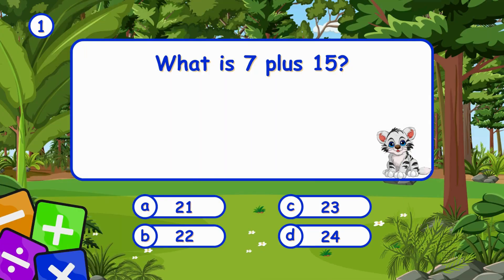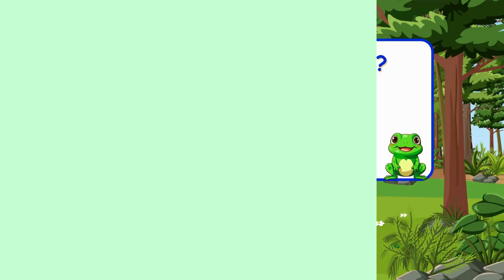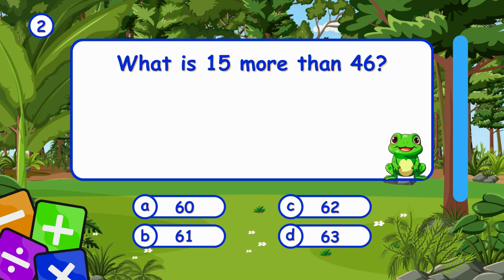What is 7 plus 15? It's B, 22. Adding 7 and 15 gives 22. What is 15 more than 46? It's B, 61. Adding 15 to 46 gives 61.